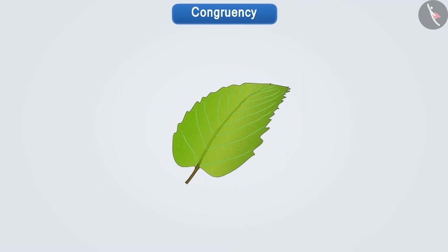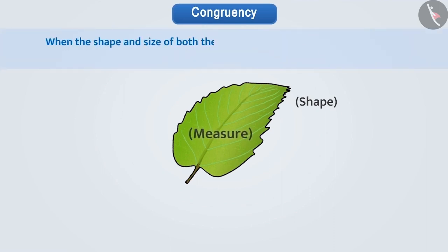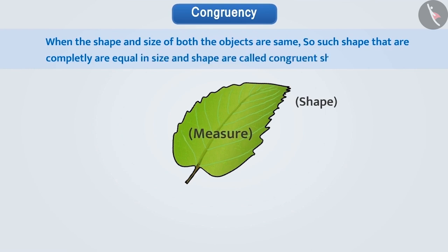One shape completely covers the other shape only in one condition. When the shape and size of both the objects are same, so such shapes that are completely equal in size and shape are called congruent shapes.